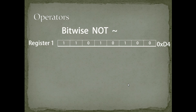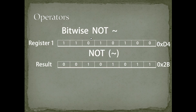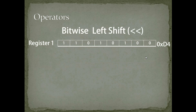For the bitwise NOT, we only have register 1. Assuming the register value is 0xD4, if I NOT this register: 1→0, 1→0, 0→1, 1→0, 0→1, 1→0, 0→1, 0→1. The result of this NOT operation will be 0x2B.